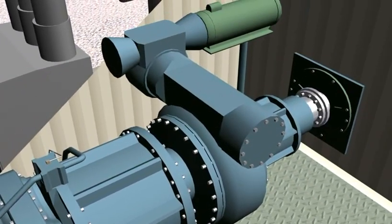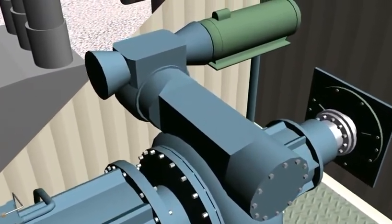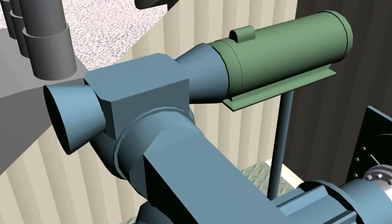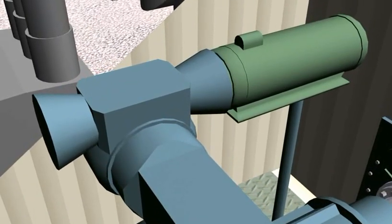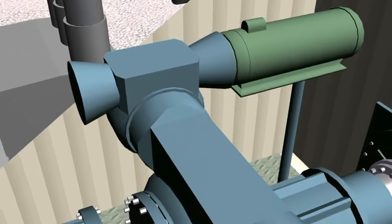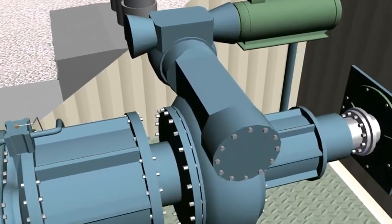The turning gear provides a slow rotation of the turbine generator shaft to help keep the rotor shaft straight. A 10 horsepower, 125 volt DC motor provides the approximate turning gear speed of 2.5 RPM.